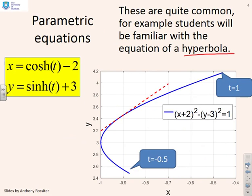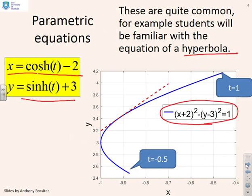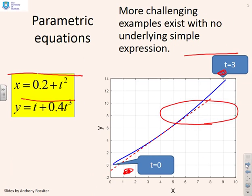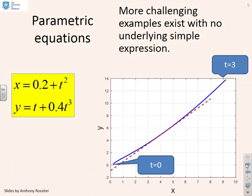Here's a different example of parametric equations describing a hyperbola: x equals cosh(t) minus 2 and y equals sinh(t) plus 3. Again, in this case you can find an underlying expression since it's a hyperbola. You can substitute in different values of t to find where you are on the curve. The question here is: what is the gradient where t equals 0.4?